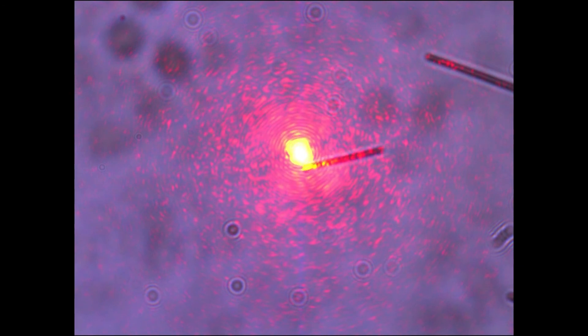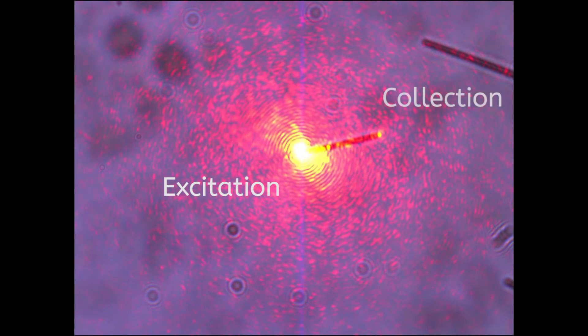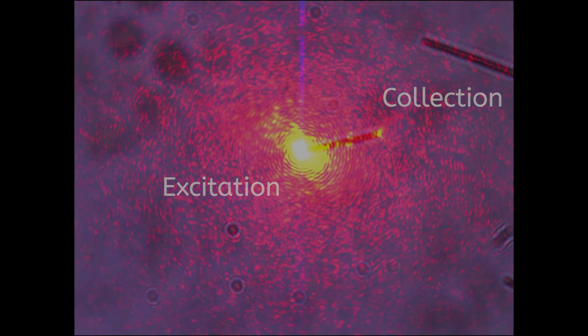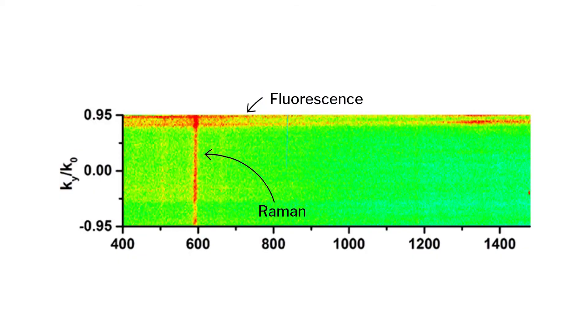Now the light which is coming from the other end, we analyzed its momentum signatures, rather the angular signatures which are coming out, and we found that the Raman scattering is getting emitted in a particular direction while the other processes, rather here molecular fluorescence, is getting emitted in the other direction.